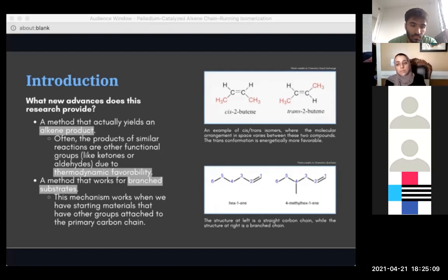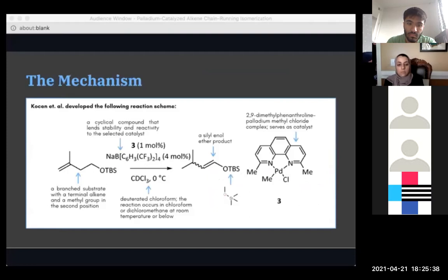The first thing is that we actually get an alkene. In other similar reactions, the ending products are ketones or aldehydes, which are different functional groups because they are more thermodynamically favored than alkenes. Secondly, the new mechanism works well with both straight and branch substrates, which you can see in the bottom-right image. This is where we're at right now. The research I looked into displays a mechanism that isomerizes terminal alkenes to internal alkenes and works with branch substrates.